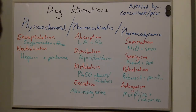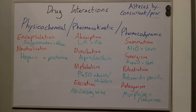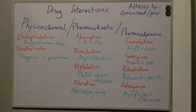And finally, we have pharmacodynamic drug interactions. The different types include summation, which occurs when the action of two or more drugs is additive — for example, giving nitrous oxide along with sevoflurane. Synergism occurs when the combined action of two or more drugs is greater than the sum of their individual effects.